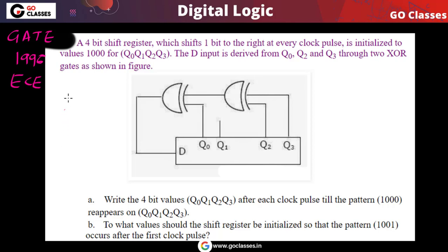Hi everyone, let's solve this question — this is GATE 1996 Electronics question. A four-bit right shift register is given, which shifts one bit to the right at every clock pulse. It is initialized to the value 1000. The question asks: after how many clock pulses will this register content appear again?